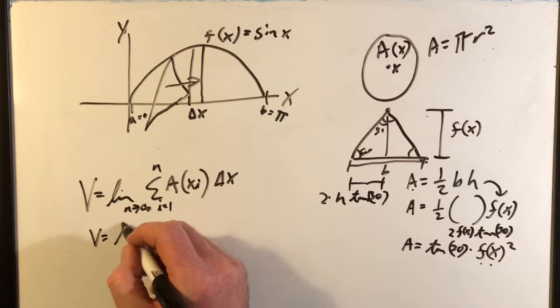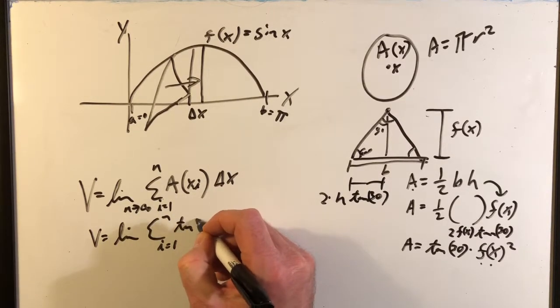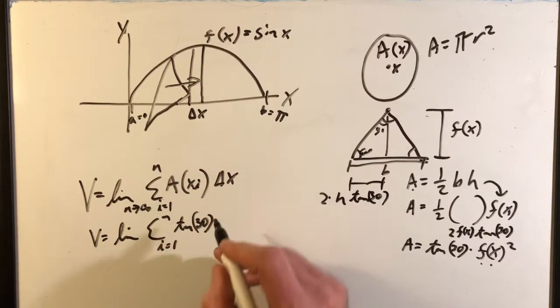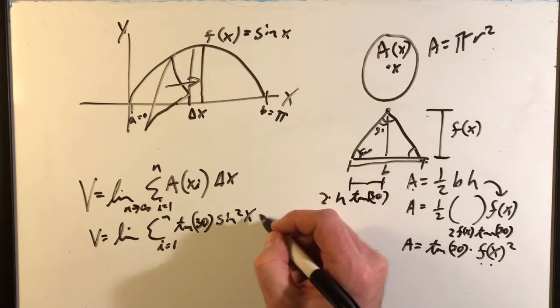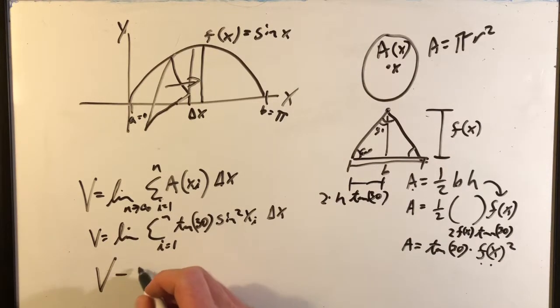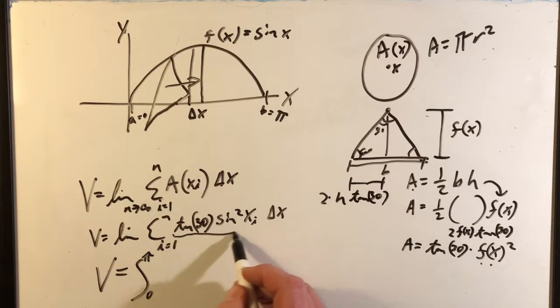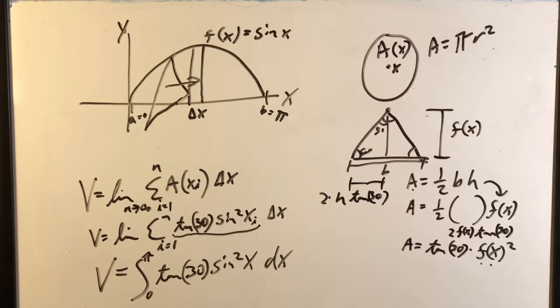So volume equals limit as n goes to infinity, sum from i equals 1 to n. We'll start substituting in. We've got our nice tangent 30 degrees, which is constant, so we're not going to have to worry about them too much. f of x squared. So we have sine squared x, and that's times delta x. So that gets translated into our integral.